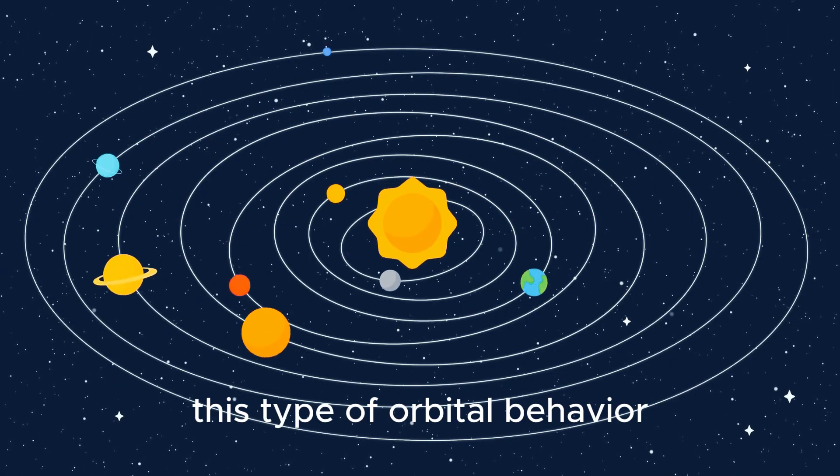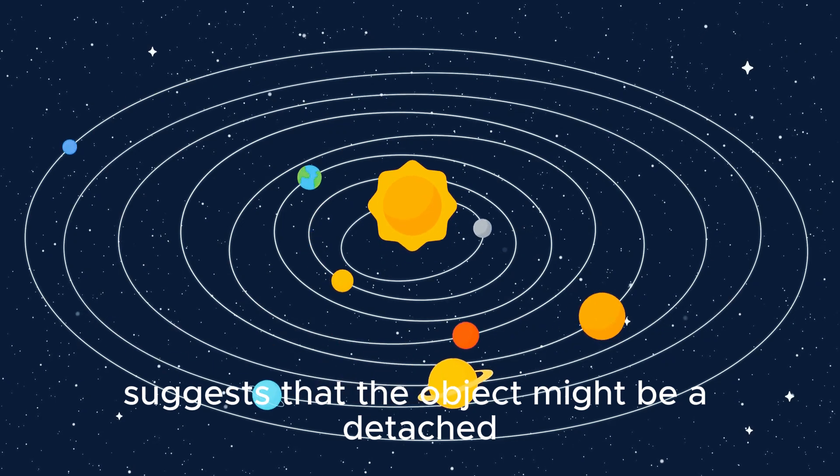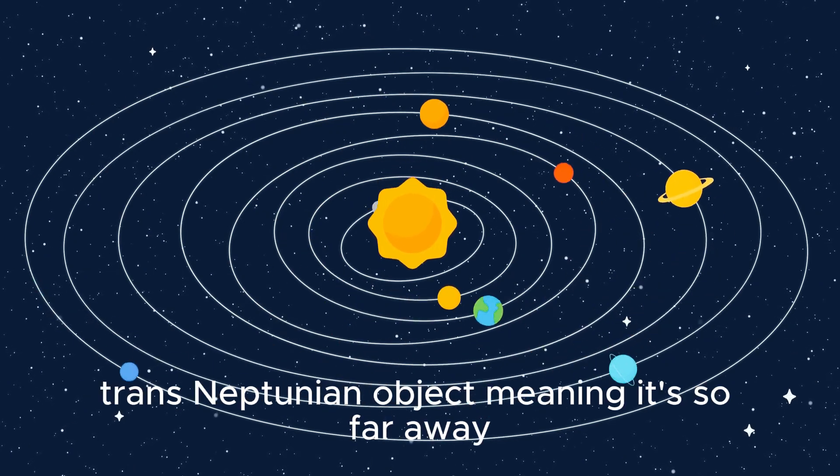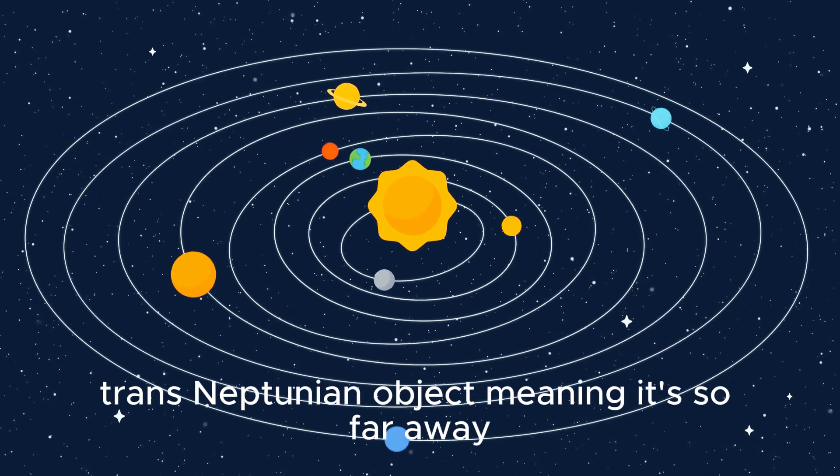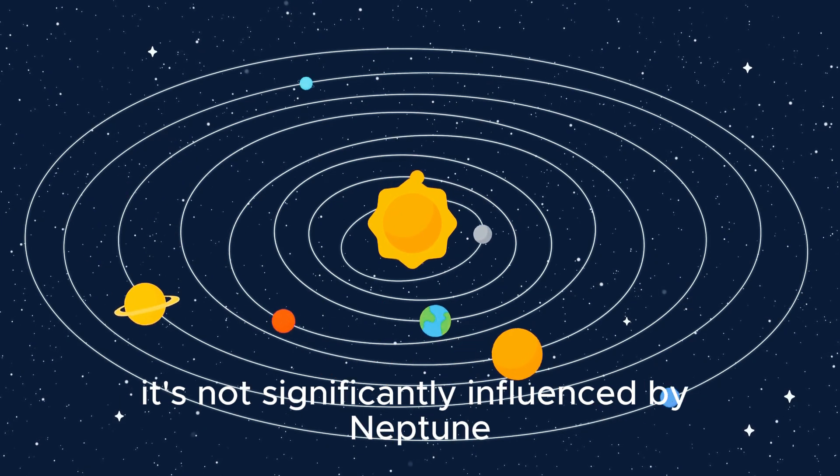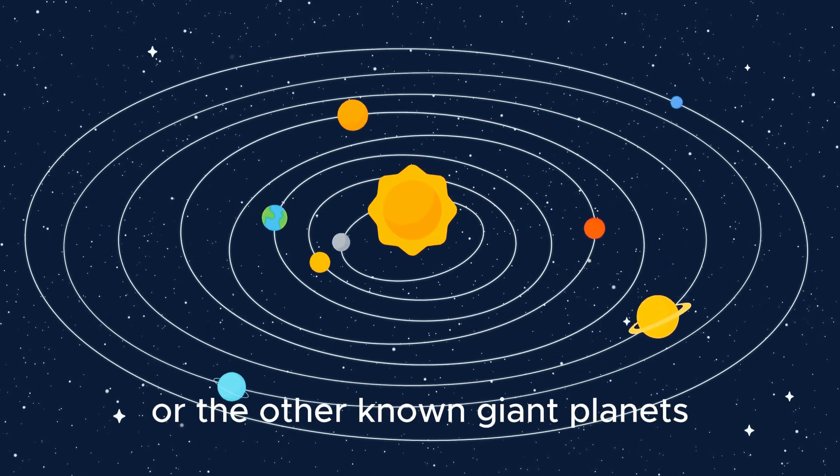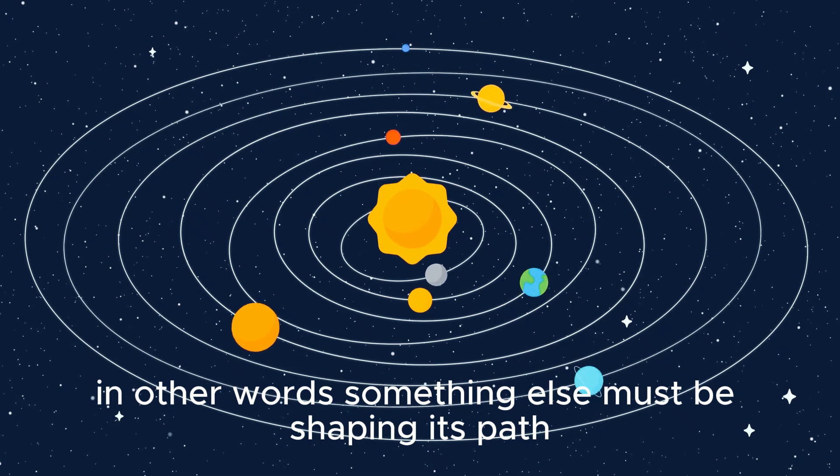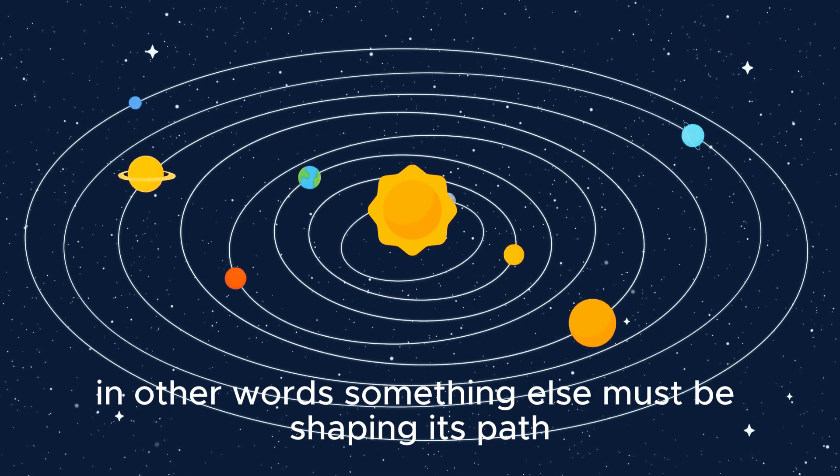This type of orbital behavior suggests that the object might be a detached trans-Neptunian object, meaning it's so far away it's not significantly influenced by Neptune or the other known giant planets. In other words, something else must be shaping its path.